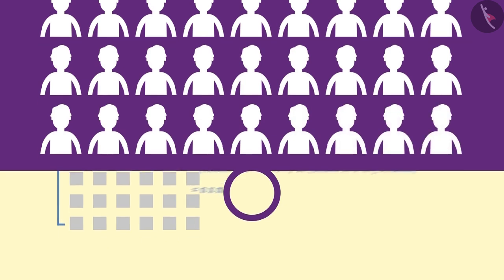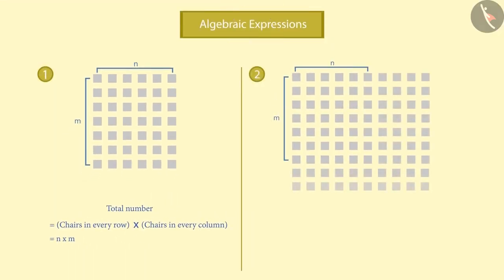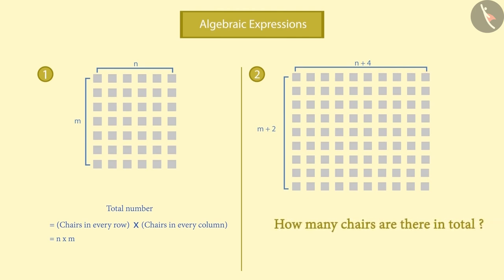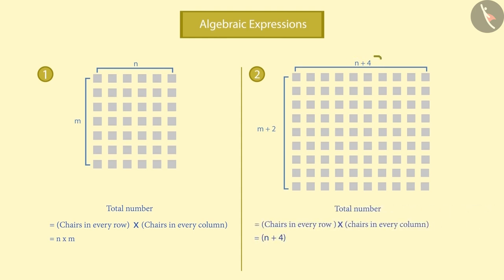Now, when the number of cinema goers started increasing, the owner decided to increase the capacity of the cinema hall. He installed 4 extra chairs in each row and 2 extra chairs in each column. So now, the number of chairs in each row becomes N plus 4, and the number of chairs in each column equals M plus 2. The total number of chairs is equal to the product of N plus 4 and M plus 2.